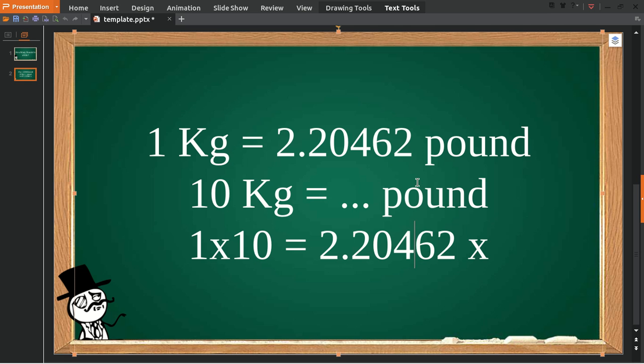To multiply this 2.20462 by something, yes of course you need to multiply it with 10 as well, because you have 10 on the left you must have 10 on the right.